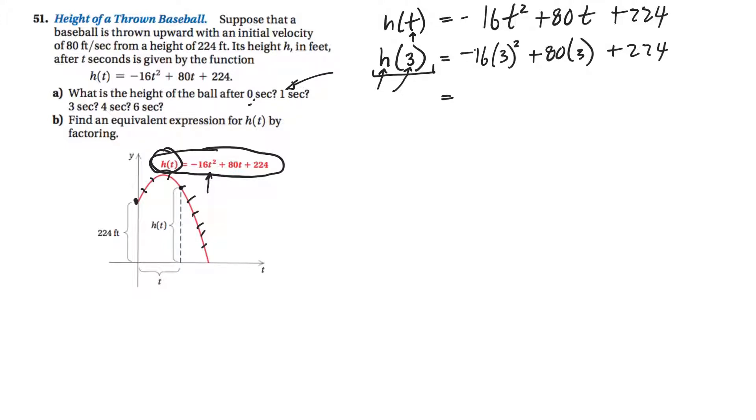Three squared is nine, nine times 16, negative 144, I think. 80 times three, about 240, plus 224 is equal to, what would that be? 96, yeah, 96 plus 224 equals 320. 320, yeah, 320.